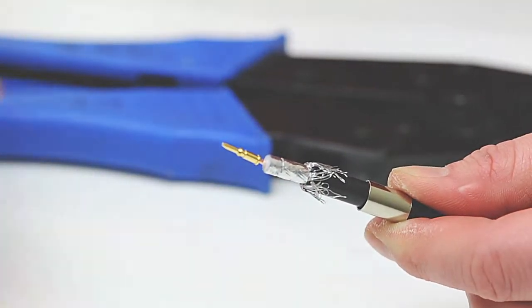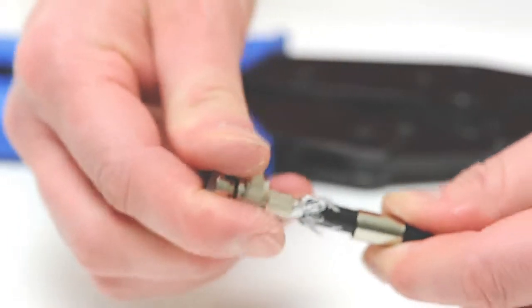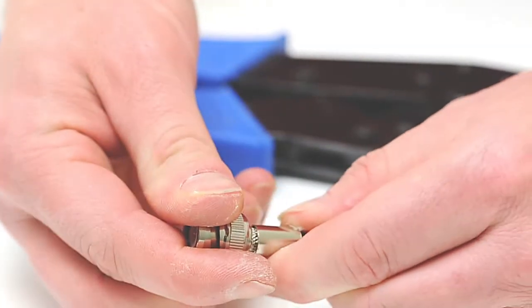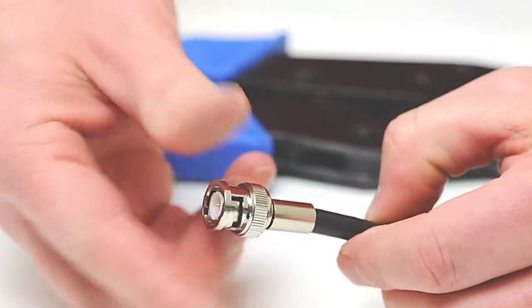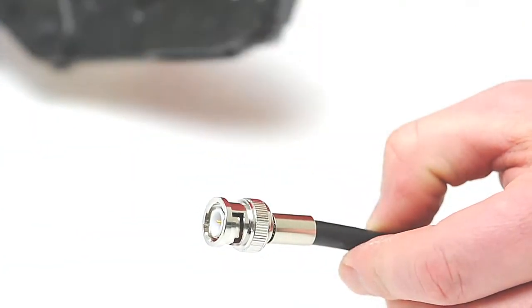Next, take the BNC housing and slide it all the way onto the cable. Slide the ferrule back over the jacket, making sure it holds the braid onto the connector.